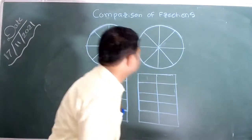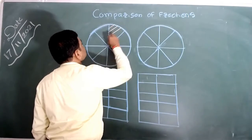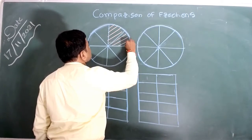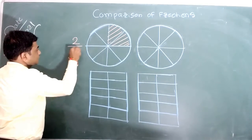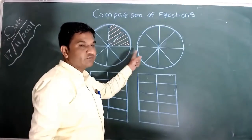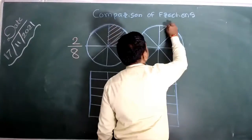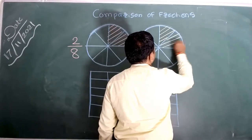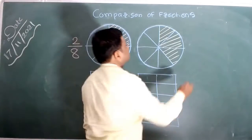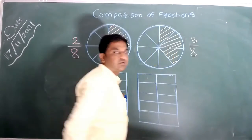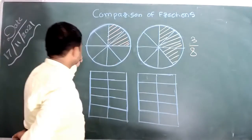For example, we are going to take a circle and divide it into 8 equal parts. If I shade 2 parts of it, then the fraction of the shaded part will become 2 out of 8. Now, if I take another circle of the same size, also divided into 8 parts, and shade 3 parts out of these 8 parts, then the fraction of the shaded part will become 3 upon 8. By looking at these two circles, it is very clear that the fraction 3 by 8 is greater than 2 by 8.